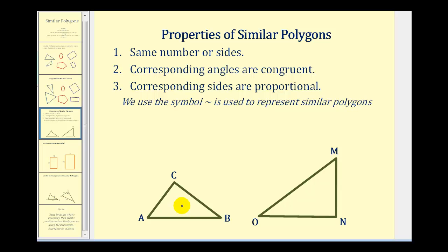Let's see if we can identify the corresponding angles in these two similar triangles. Notice that angle C is the angle that looks close to 90 degrees, and looking at the larger triangle, angle C would correspond with angle N. Because these two triangles are similar, these two angles are congruent, or equal in measure, and we can identify that by using the same number of arcs. Now angle A, which is formed by the shortest side and the longest side of this triangle, would correspond to angle M in the large triangle. Because these are corresponding angles, they are congruent.